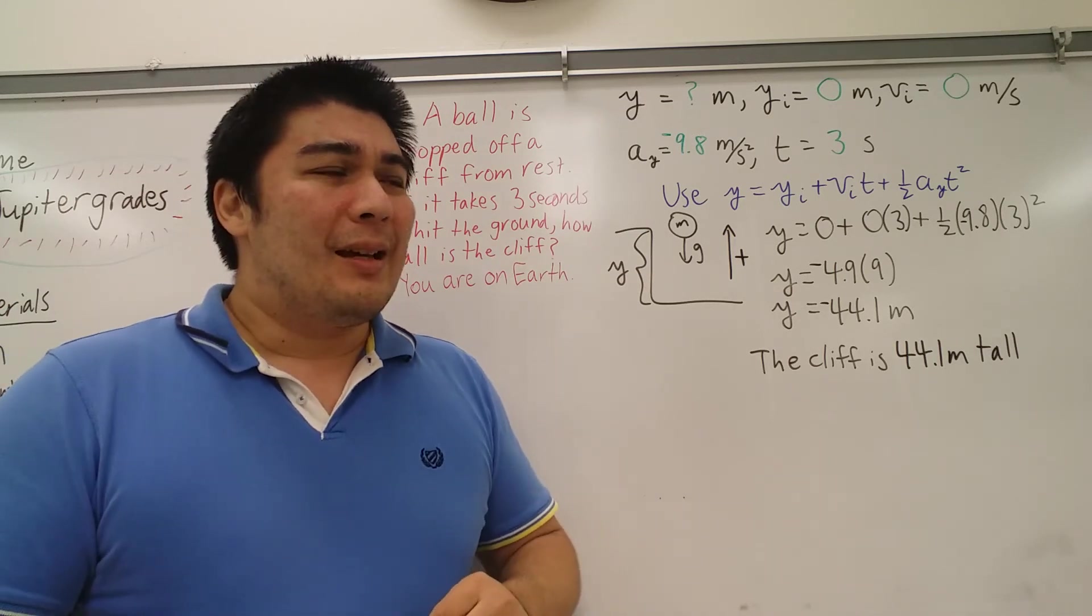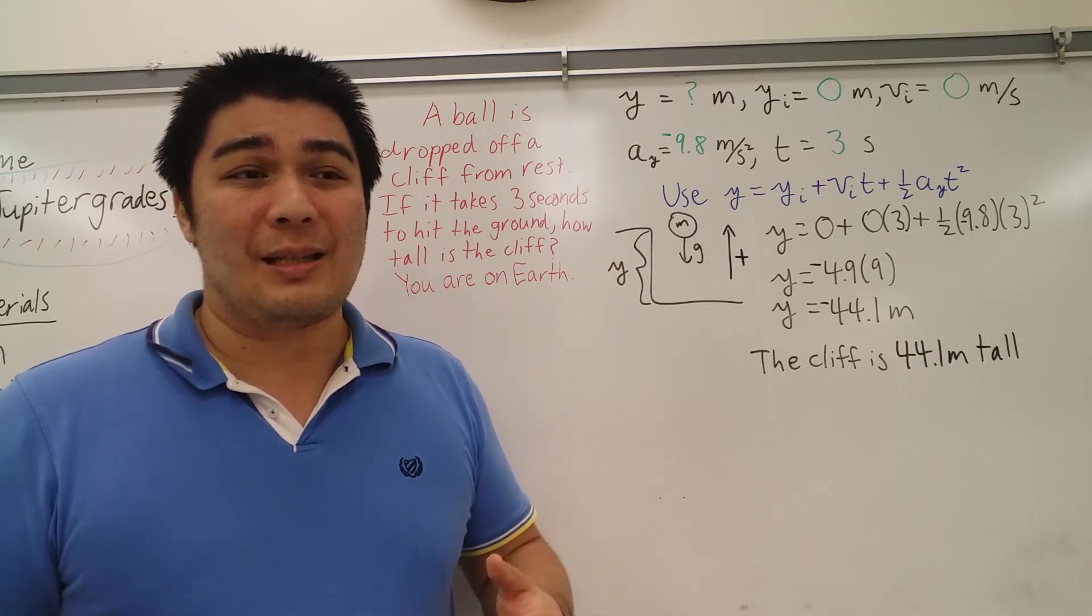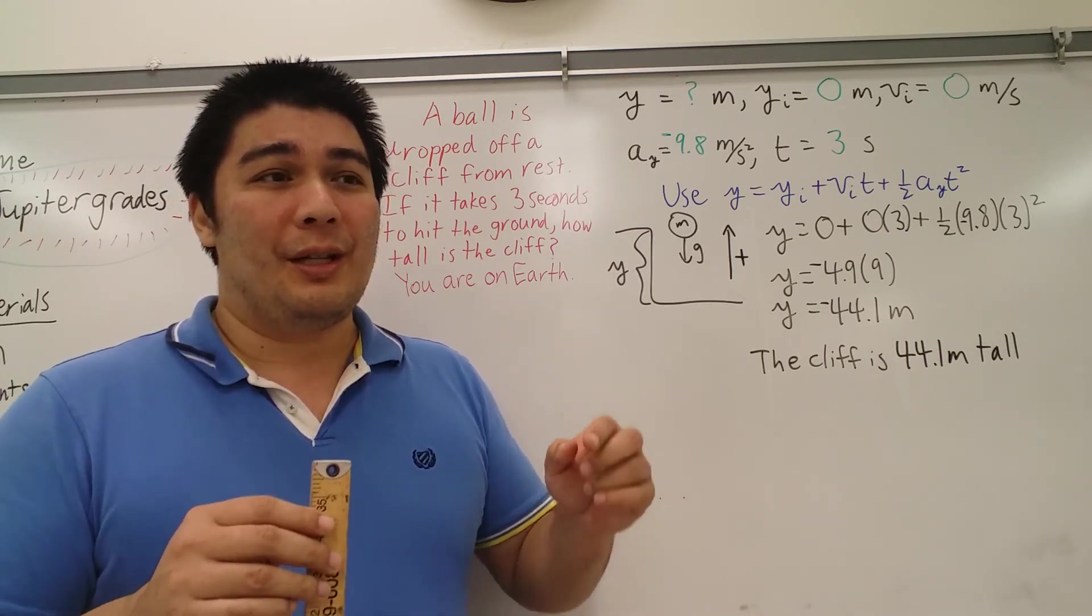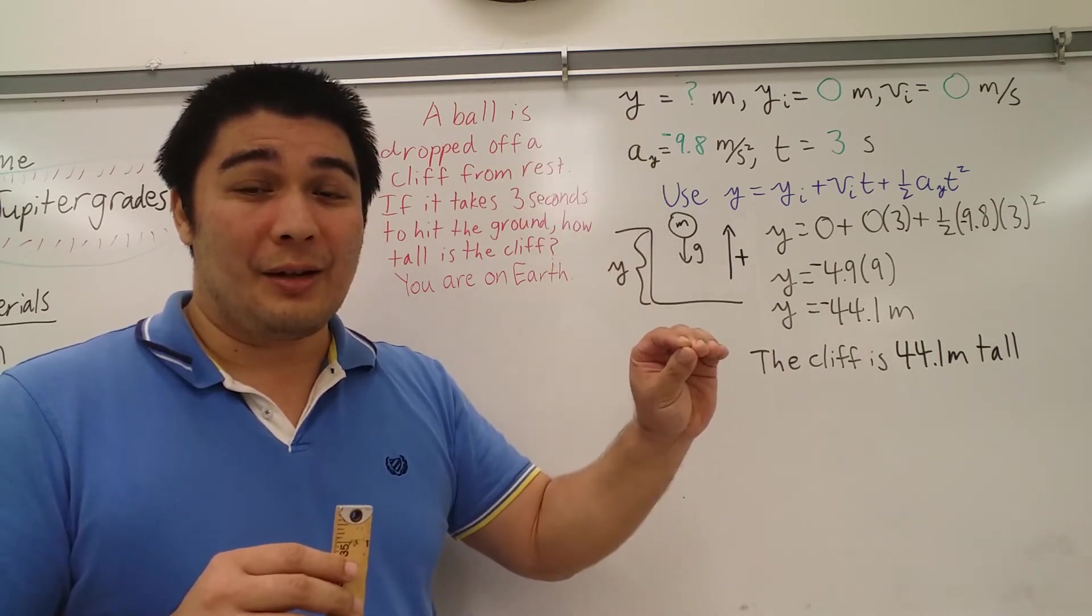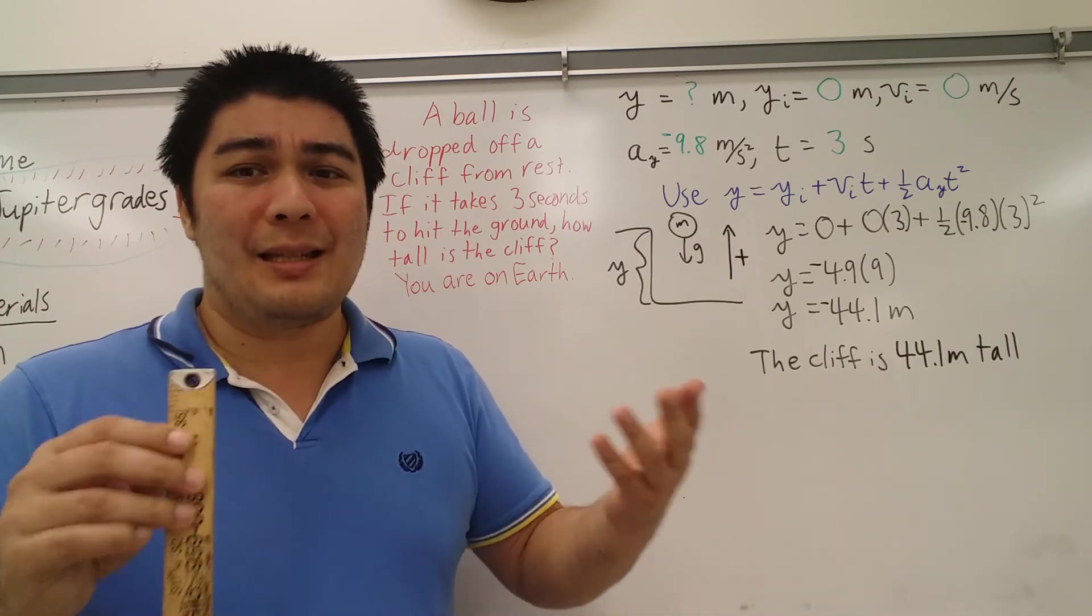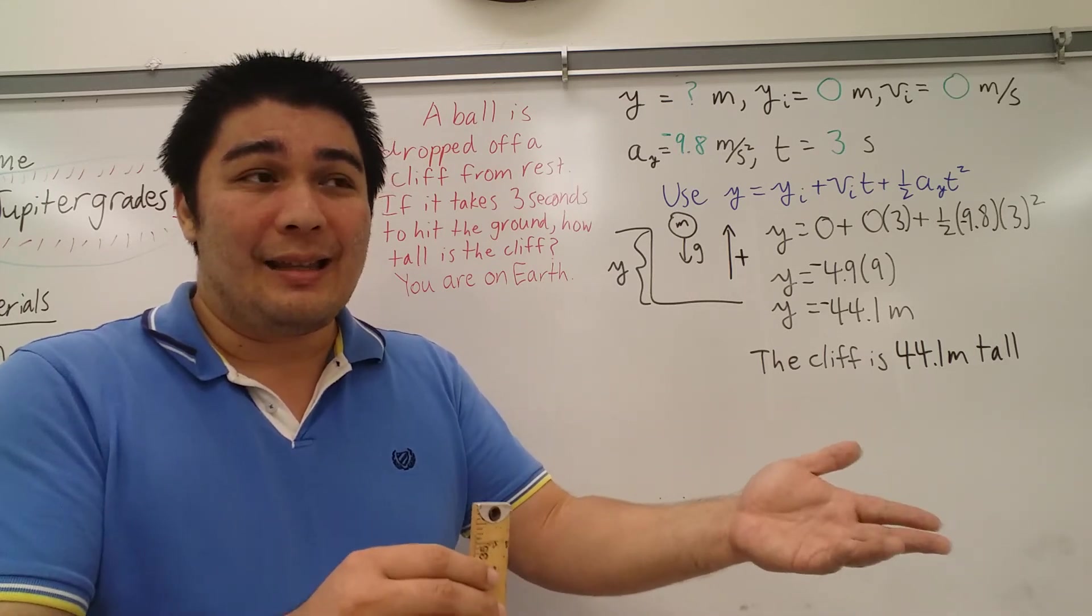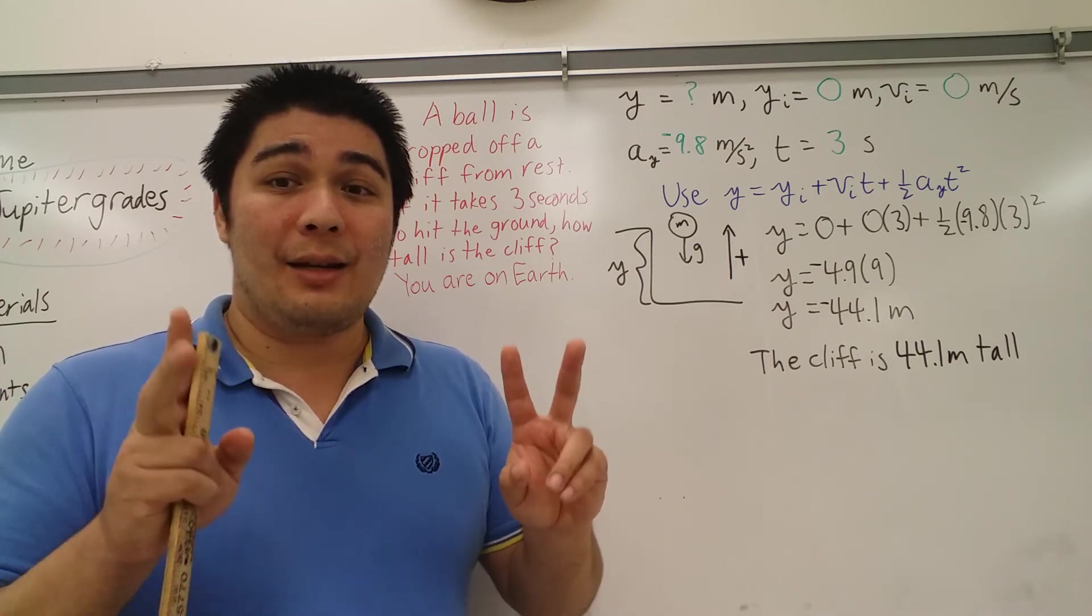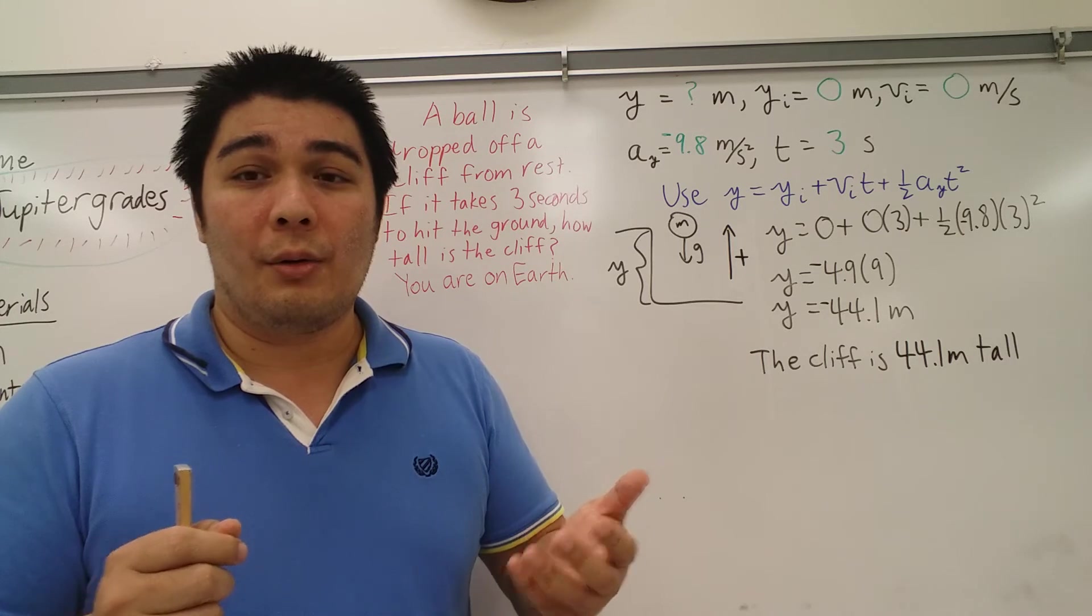However, the cliff is not negative 44.1 meters tall. That actually makes no sense because while the ball may have traveled from one position to another, the cliff's height is unchanged. It's still a positive number. A cliff cannot have a negative height that actually doesn't make sense because if it had what we would consider a negative height, then it would not be a cliff. It would be a hole or a valley.